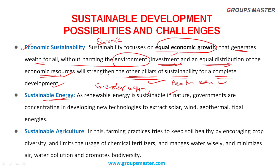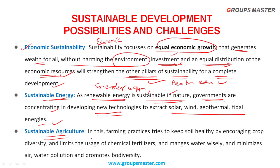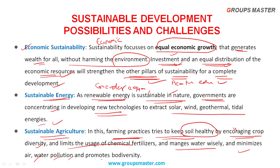Regarding climate and renewable energies: governments are concentrating on developing new technologies to extract solar, wind, thermal, and tidal energies. For sustainable agriculture, farming practices try to keep soil healthy and fertile by increasing crop diversity, limiting the use of chemical fertilizers, managing water wisely, minimizing air and water pollution, and promoting biodiversity.